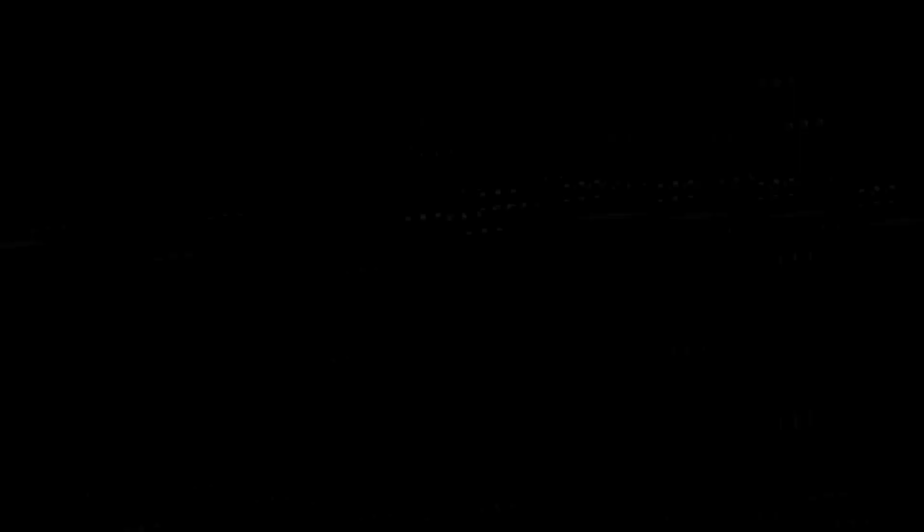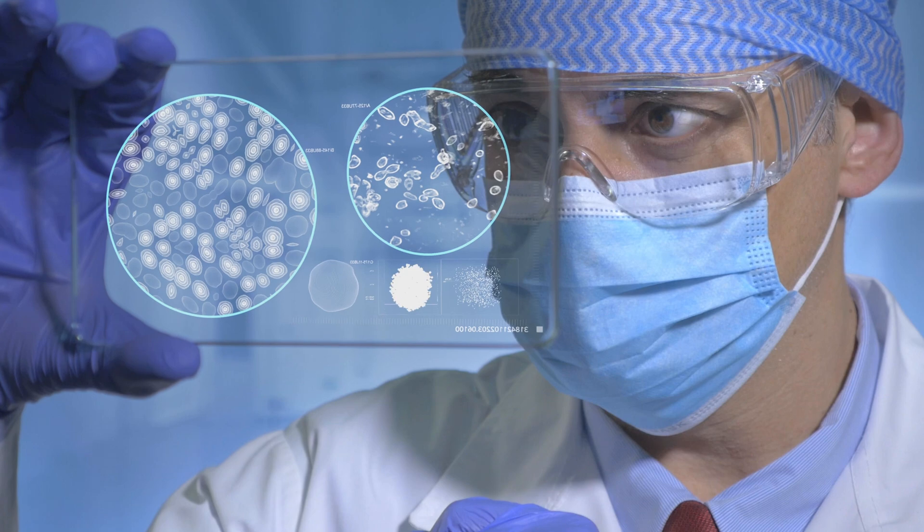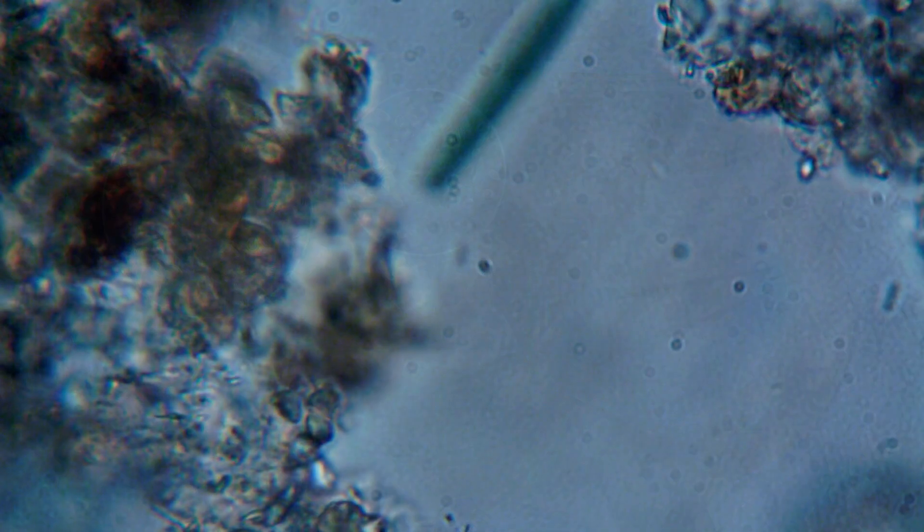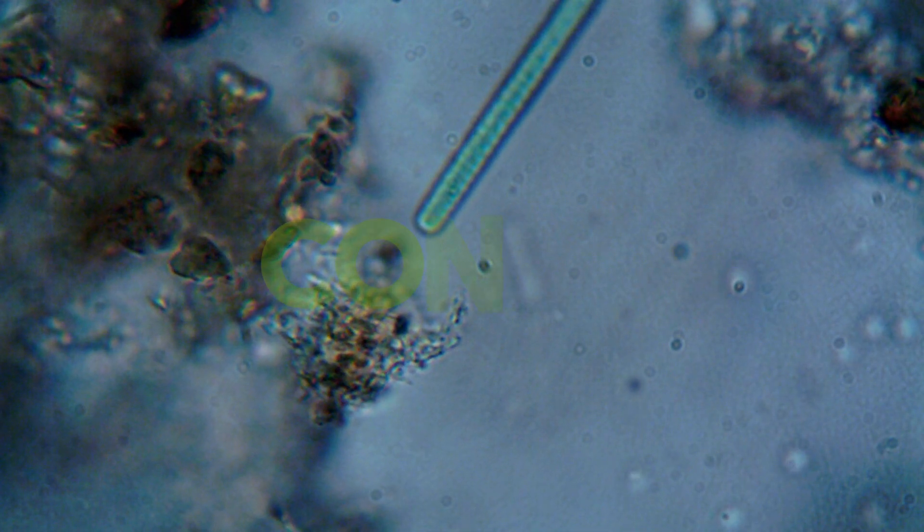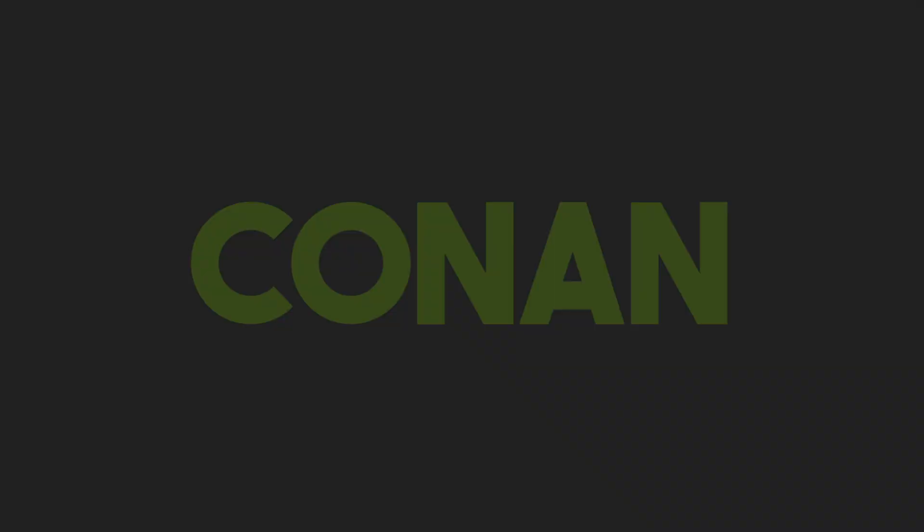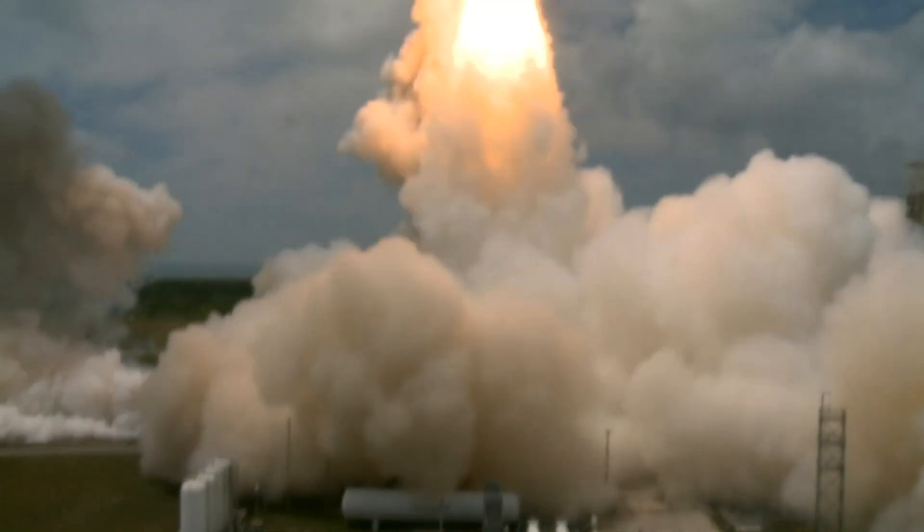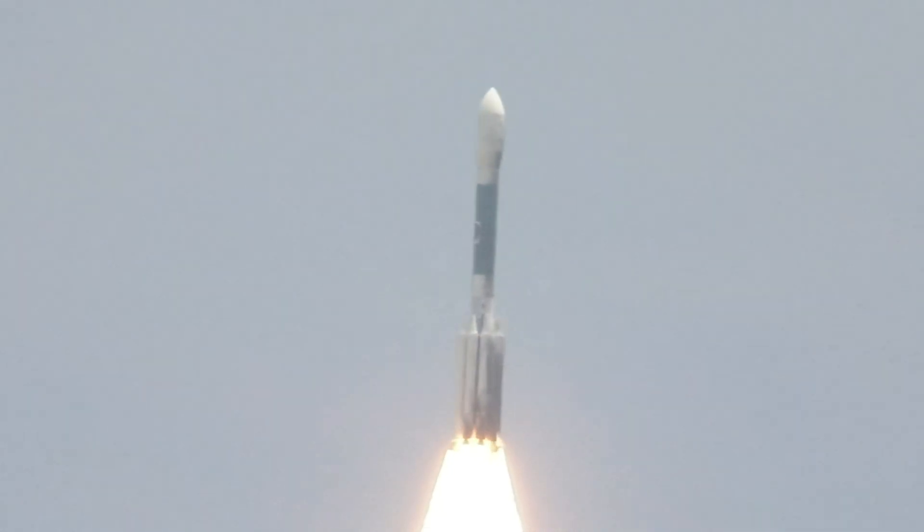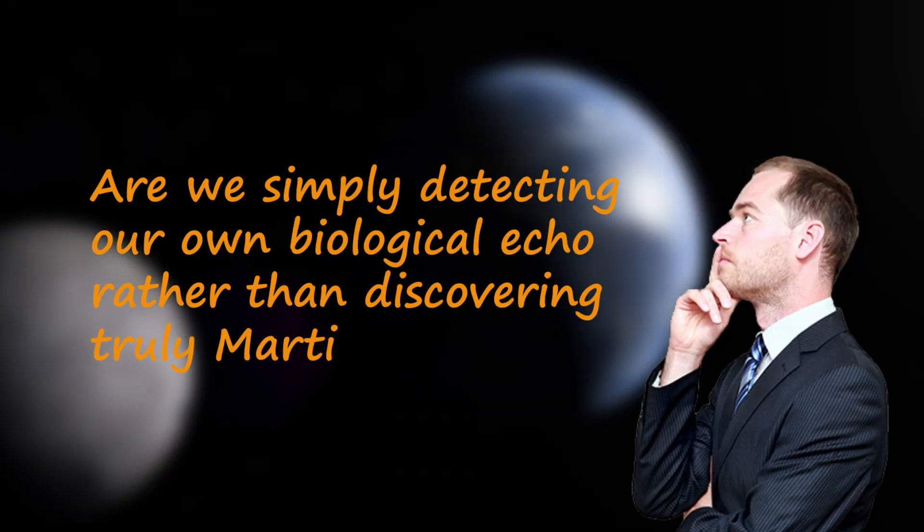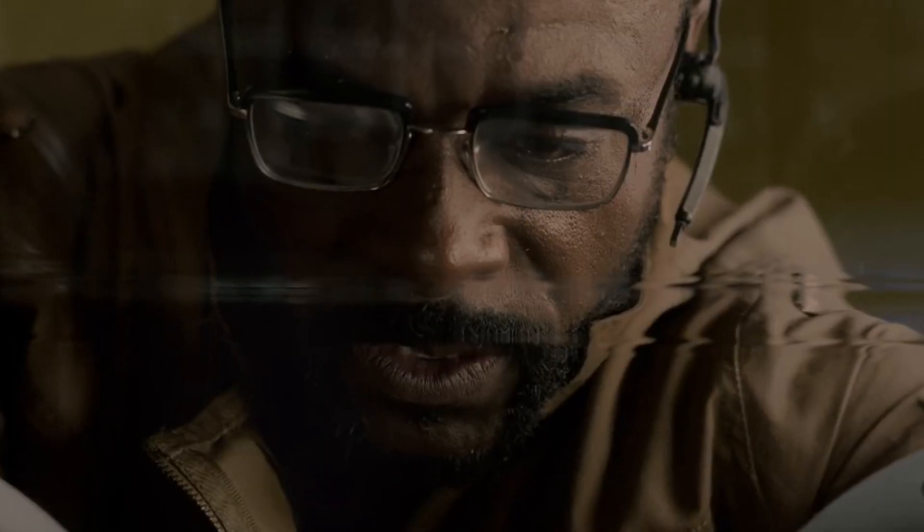However, this exciting company is not without controversy. A major debate revolves around the possibility that microbial life discovered on Mars, including a bacteria like Conan, may actually be the result of contamination from Earth. It is speculated that Earth-based probes and spacecraft, despite strict sterilization measures, could inadvertently transport Earth microbes to Mars. This scenario raises the question: are we simply detecting our own biological echo rather than discovering truly Martian life?